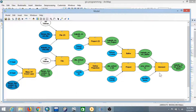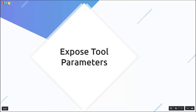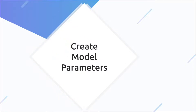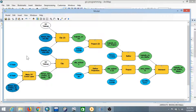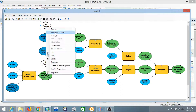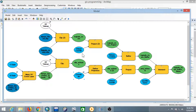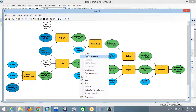As you can see, every tool now has its parameters exposed. The next thing we'll do is create model parameters for these tools. Right-click on every parameter and select 'Model Parameter'. For example, right-click on Y and select model parameter, and do the same for X — repeat this for every parameter you have exposed.